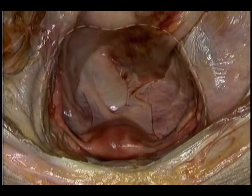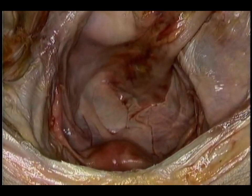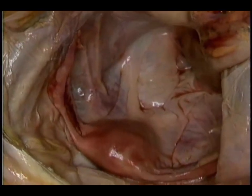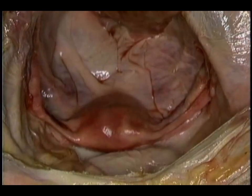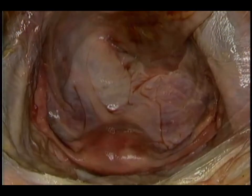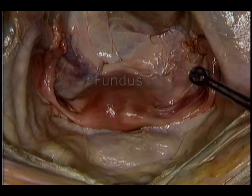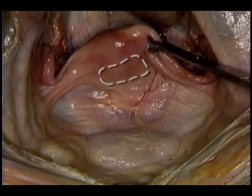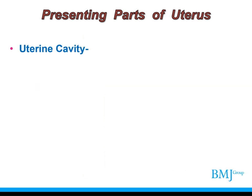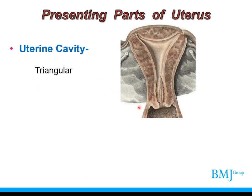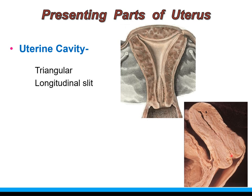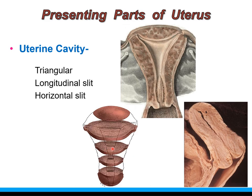Here is the pelvic brim. Here is the uterus within the pelvic cavity, with fallopian tubes and ovaries on the lateral pelvic walls. Here is the rectum behind and the urinary bladder in front of the uterus. The parts of the uterus are: the convex fundus above, which continues as the body, then the isthmus, and the cervix below. The uterus encloses the uterine cavity, which appears triangular in coronal section, a longitudinal slit in sagittal section, and a horizontal slit in cross section.